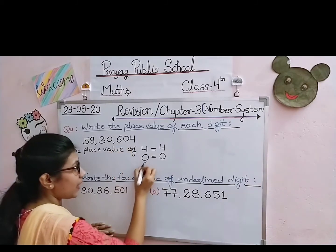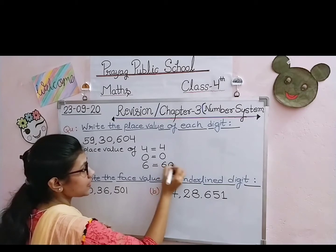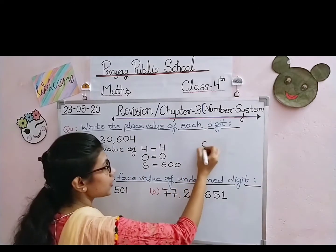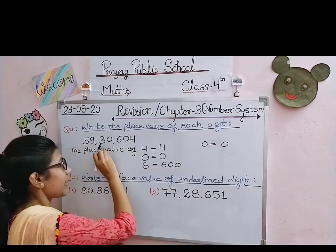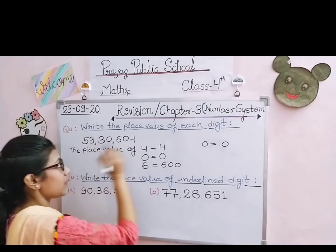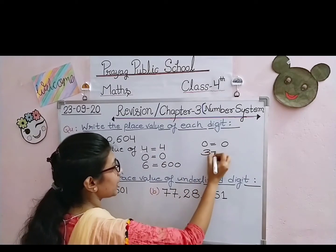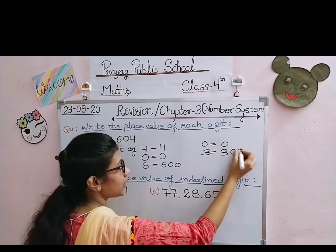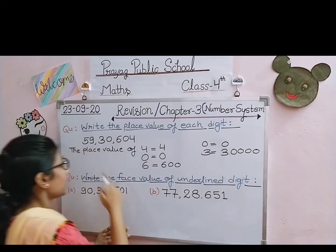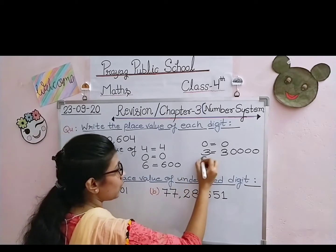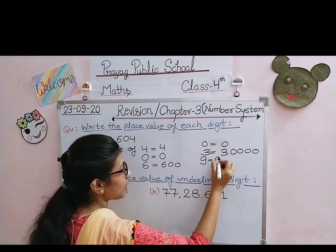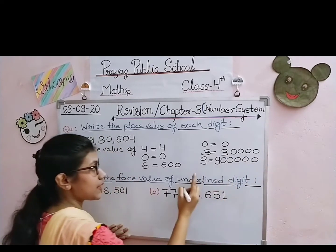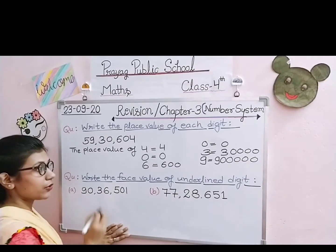6 किस place पे है? 100 के place पे है, तो 6 की place value 600 होगी। अब next — यहाँ 0 है, 0 की place value 0 होगी। 3 किस place पे है? 10,000 के place पे, तो 3 की place value — 3 as it is लिखेंगे और इसके पहले 4 zeros होंगे, यानी 30,000। 9 का place 1,00,000 है, तो 9 की place value में 5 zeros increase करके लिखेंगे — zeros count करते हैं ताकि कम या ज़्यादा न हो, वरना answer गलत हो जाएगा।